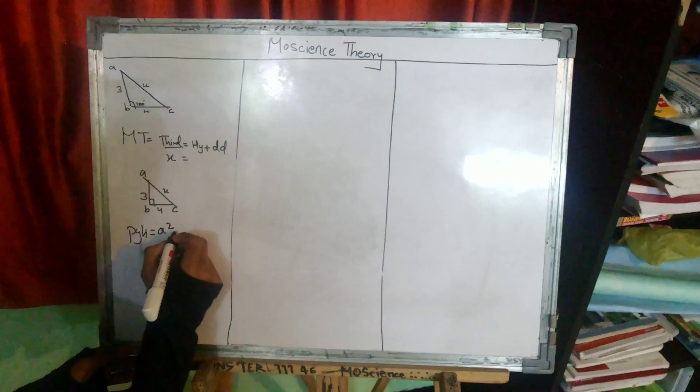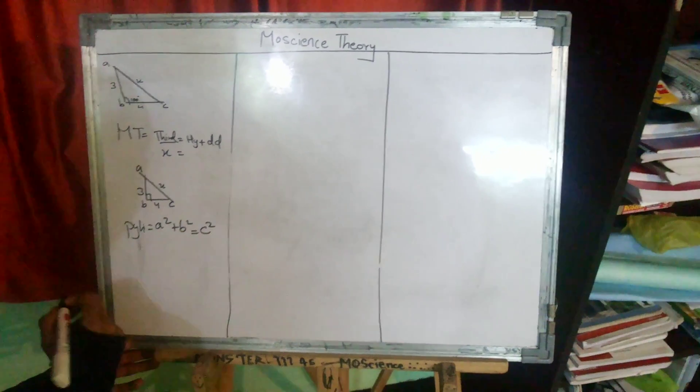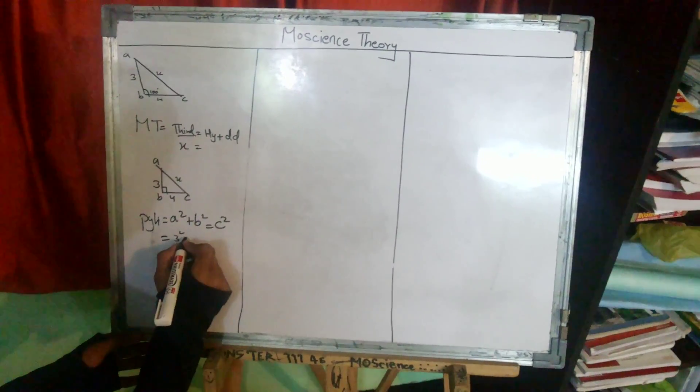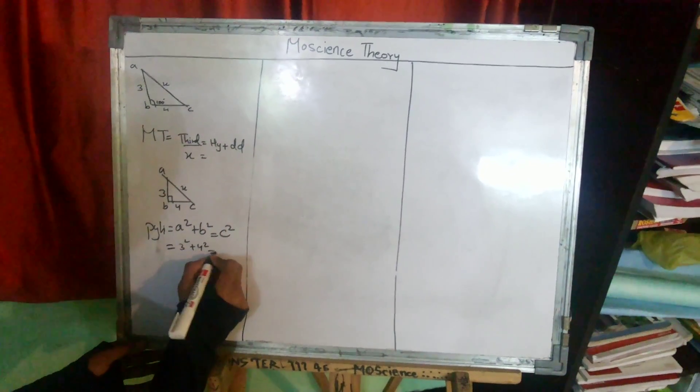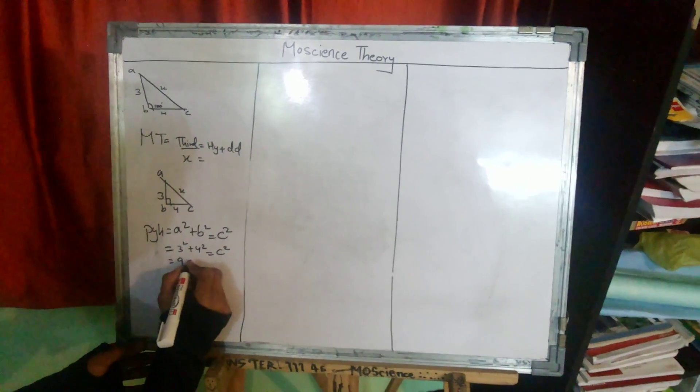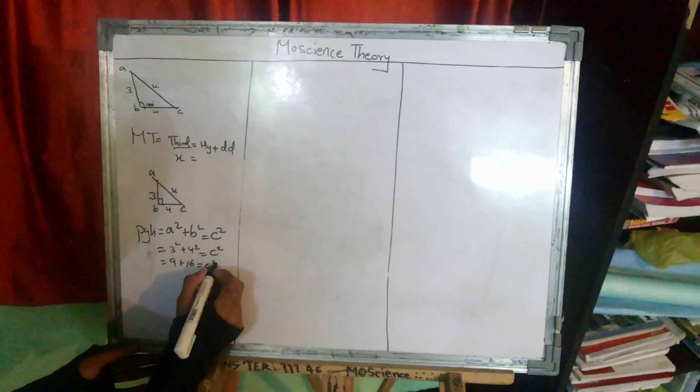A square plus B square is equal to C square. Therefore, 3 square plus 4 square is equal to C square. So 3 square is 9, 4 square is 16, is equal to C square.